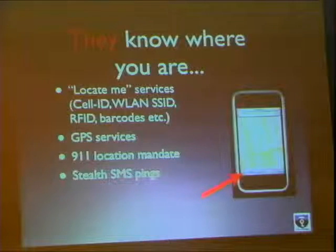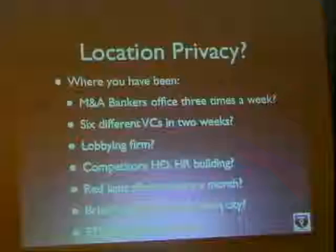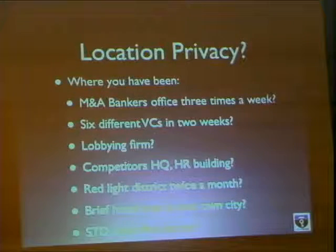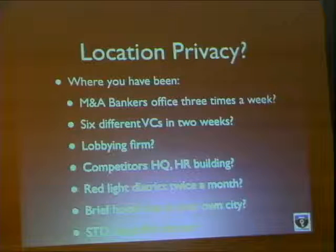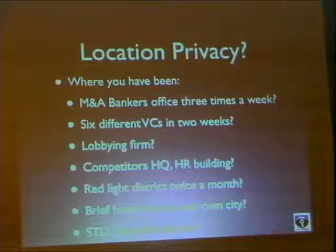On the iPhone, you have the LocateMe icon — which means not only do you know where you are, but also everybody else knows where you are. These locate-me services run via cell ID, wireless LAN, RFID, and there are GPS and SS7 region requests as well. There are a number of things you can learn from location data when you know what the location is associated with: you can see if somebody is going to the bankers, talking to many VCs, talking to a lobbying firm, visiting a competitor's human resources department, has a slight red-light district habit, or needs to visit a doctor. There's a lot that can be inferred from location.